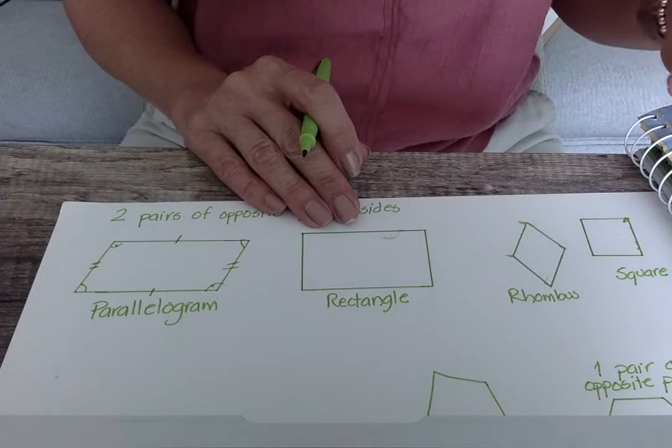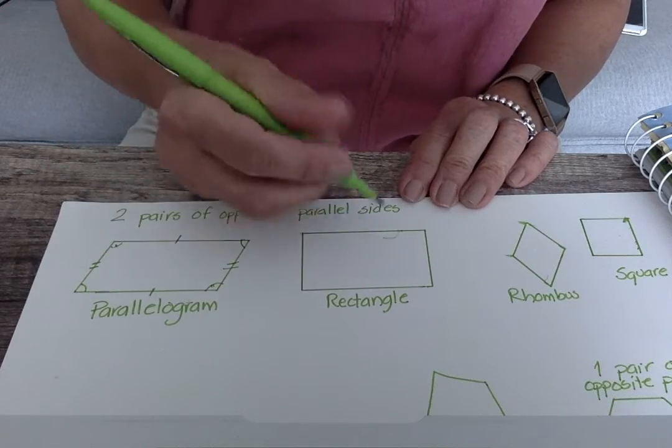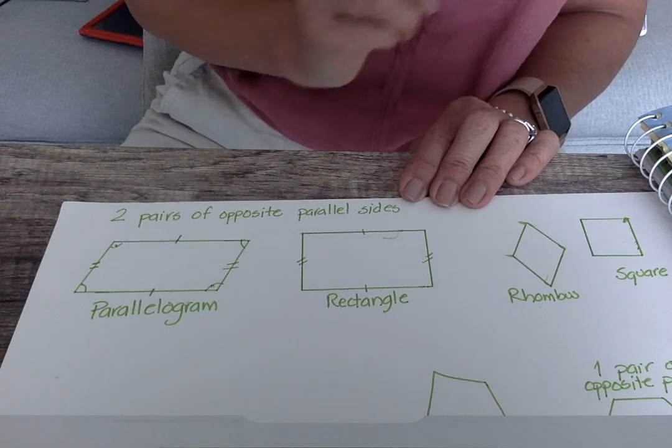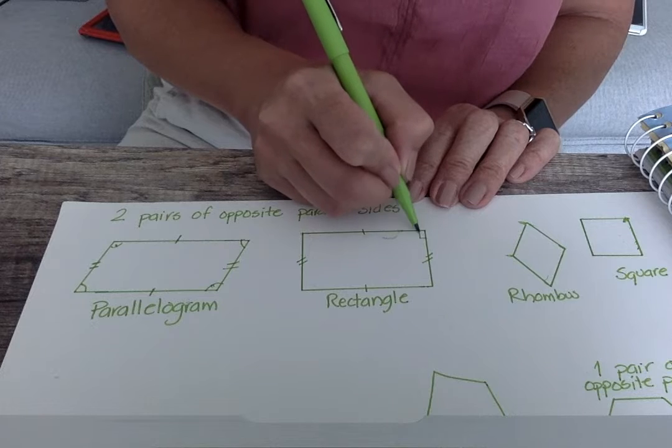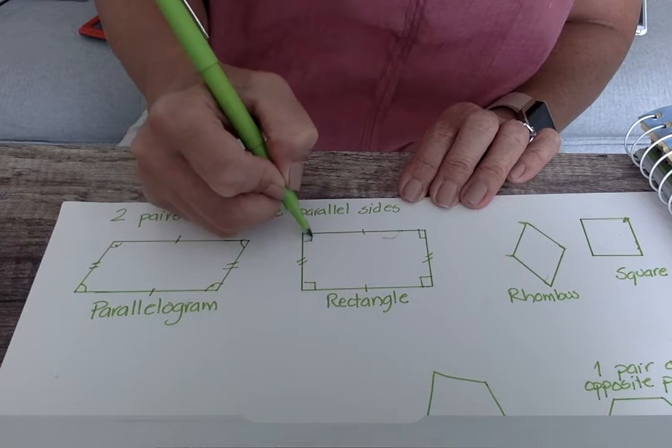Now with a rectangle, we have opposite sides that are parallel, so this and this is parallel, and this and this are parallel. And, but it also has four angles that are right angles. That's what makes a rectangle.